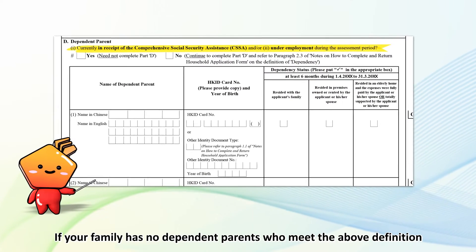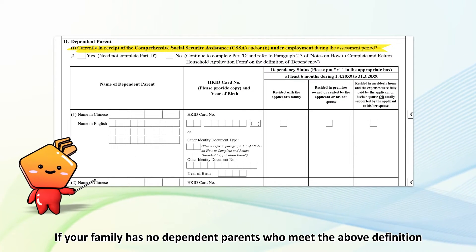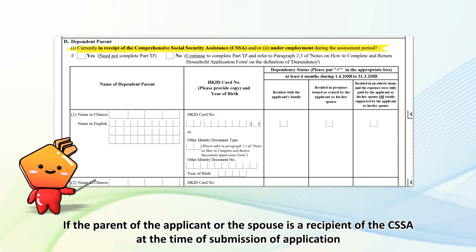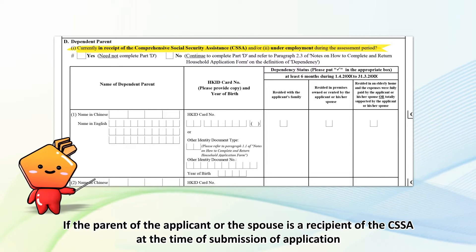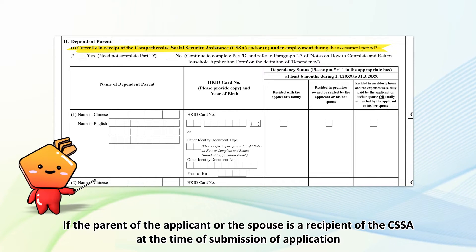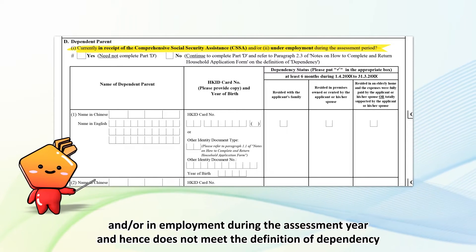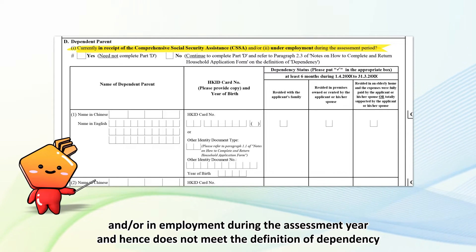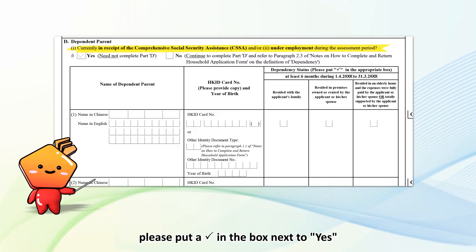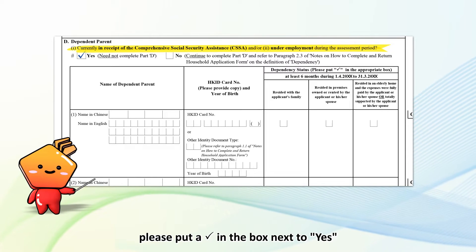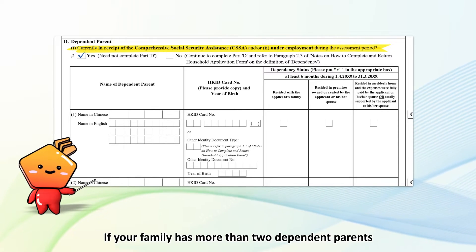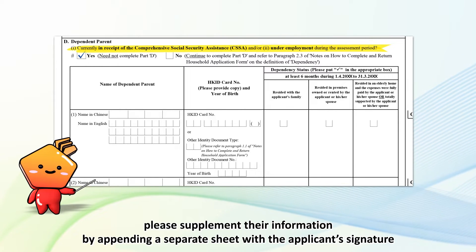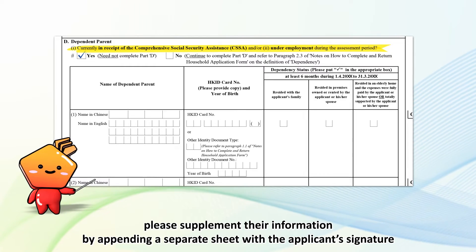If your family has no dependent parents who meet the above definition, please leave this section blank. If the parent of the applicant or the spouse is a recipient of CSSA at the time of submission of application and/or in employment during the assessment year and hence does not meet the definition of dependency, please put a tick in the box next to yes. If your family has more than two dependent parents, please supplement their information by appending a separate sheet with the applicant's signature.